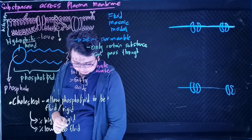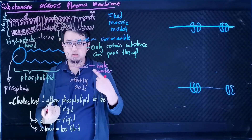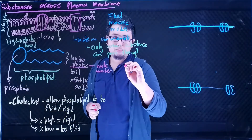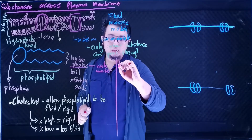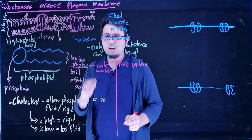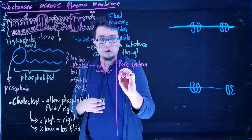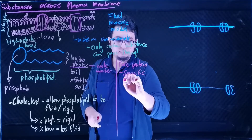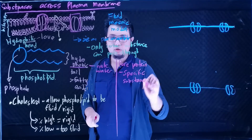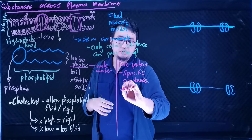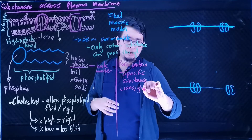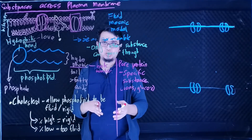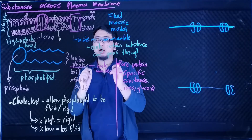Next we have two protein structures that help in transportation. The first is the pore protein. The pore protein carries out the transport of specific substances only — for example, ions and glucose. Some pore proteins have specific names, such as the sodium channel and the potassium channel. The potassium channel only transports potassium ions, and the sodium channel only transports sodium ions.